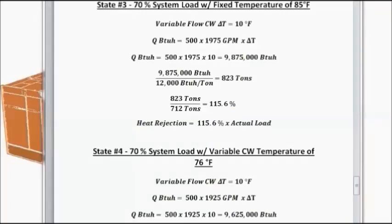In state 3, we made a significant change and dropped the load to around 70%. And we see a significant change in flow rate with the condenser water temperature maintained at a 10 degree delta T. So, we can calculate the heat rejection as a percentage of the total load. And we see this drop.